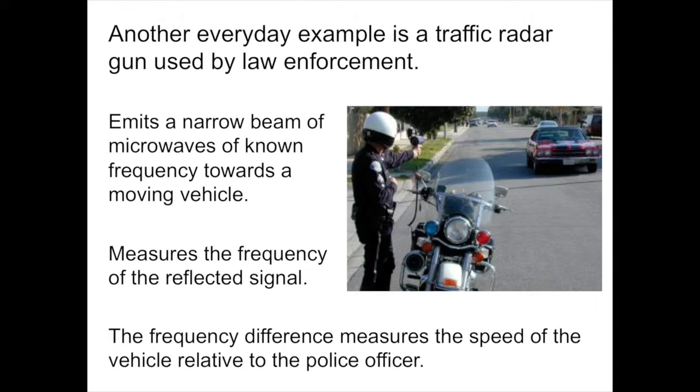By pointing the radar gun towards a moving vehicle and pressing the trigger, it emits this narrow beam and then measures the frequency of the microwave signal reflected off of the moving vehicle. A tiny computer inside the gun measures the frequency difference and converts that to a line of sight speed. This will tell the police officer whether you are moving towards or away from the officer and at what speed. If you're exceeding the speed limit, you're probably going to get a ticket.